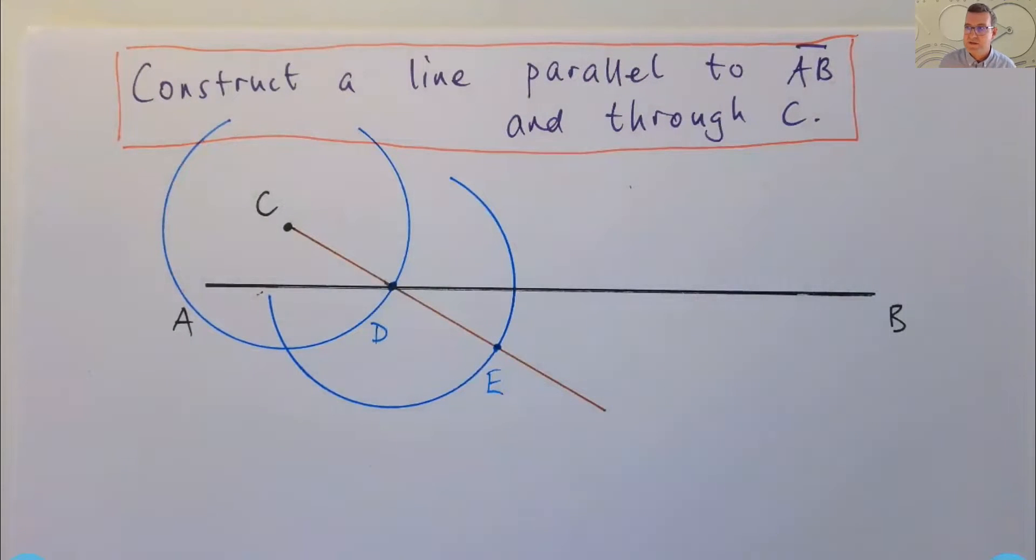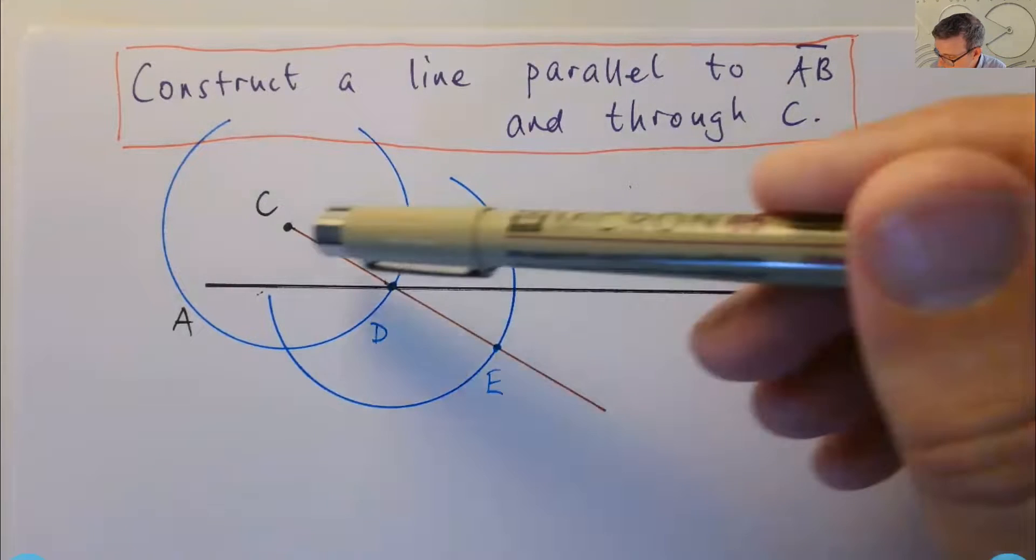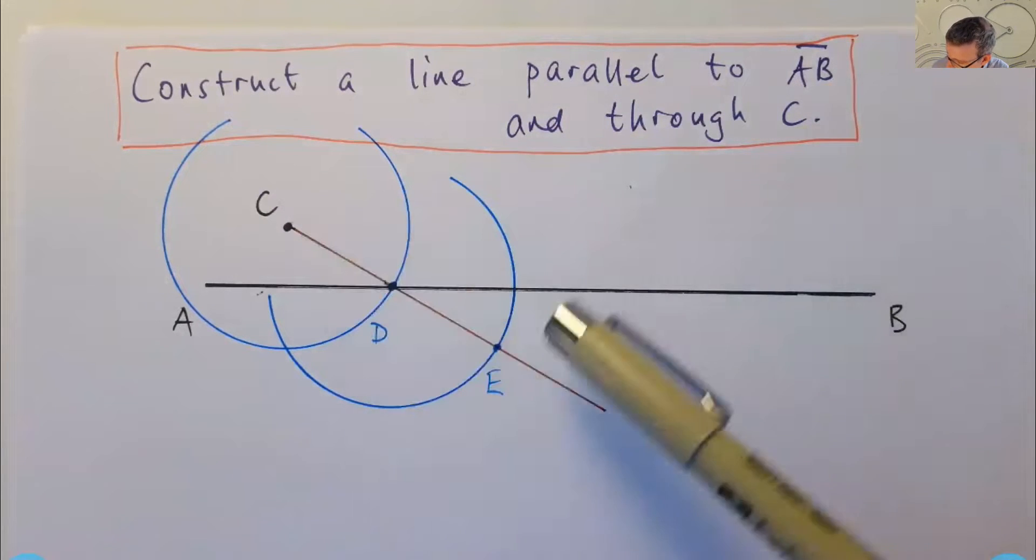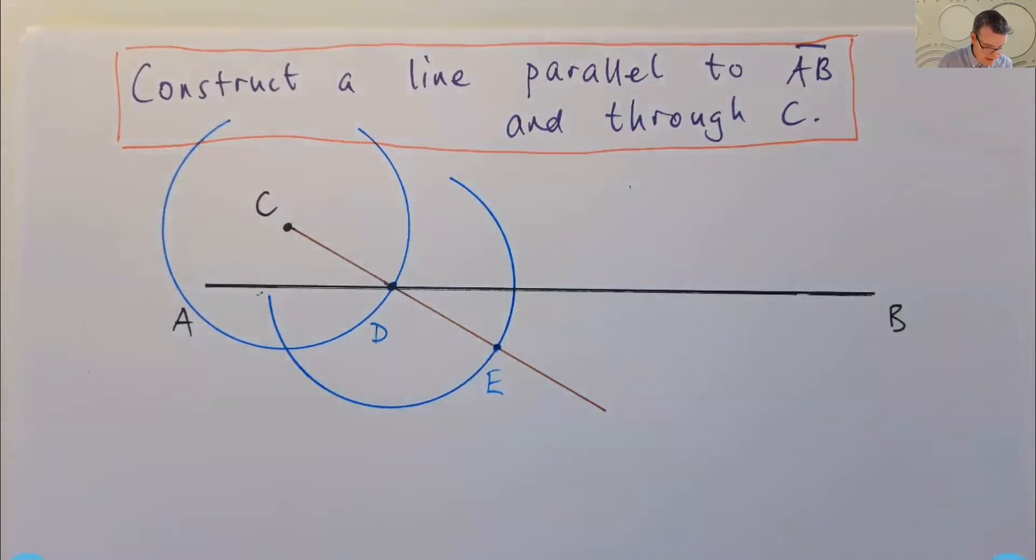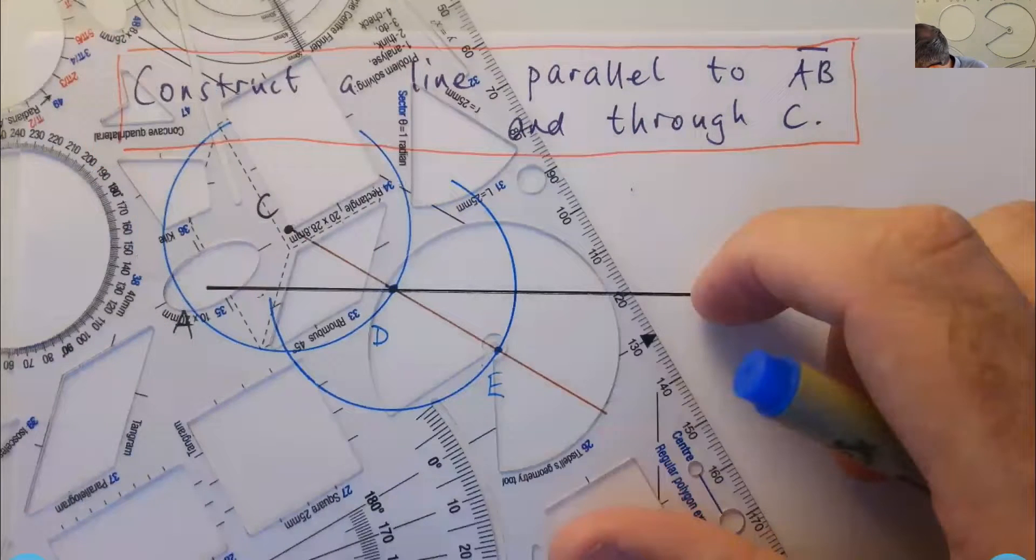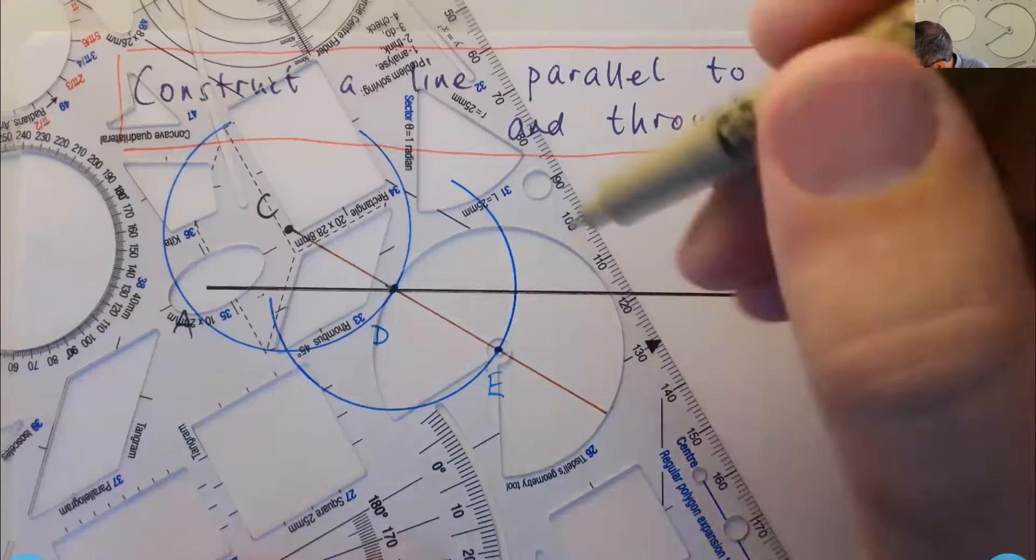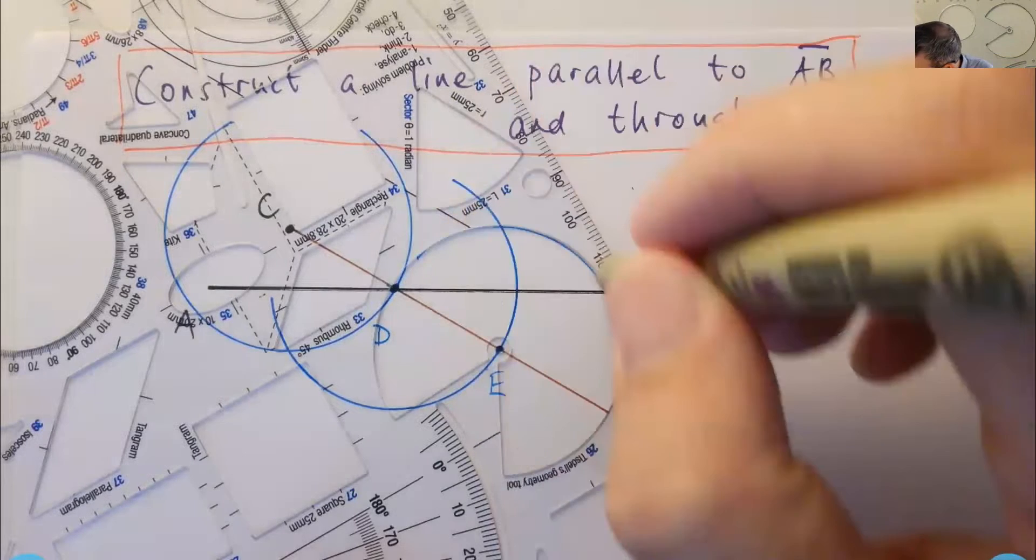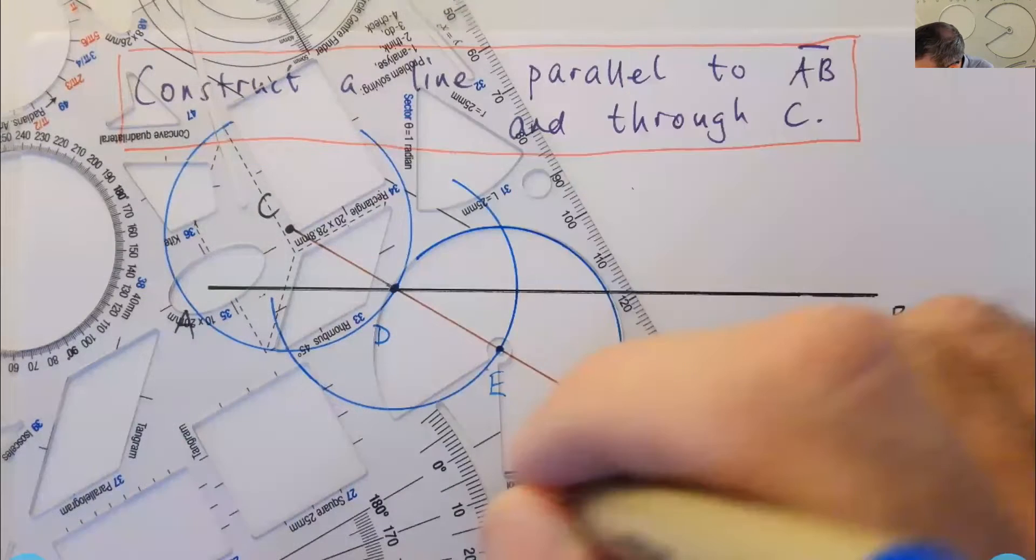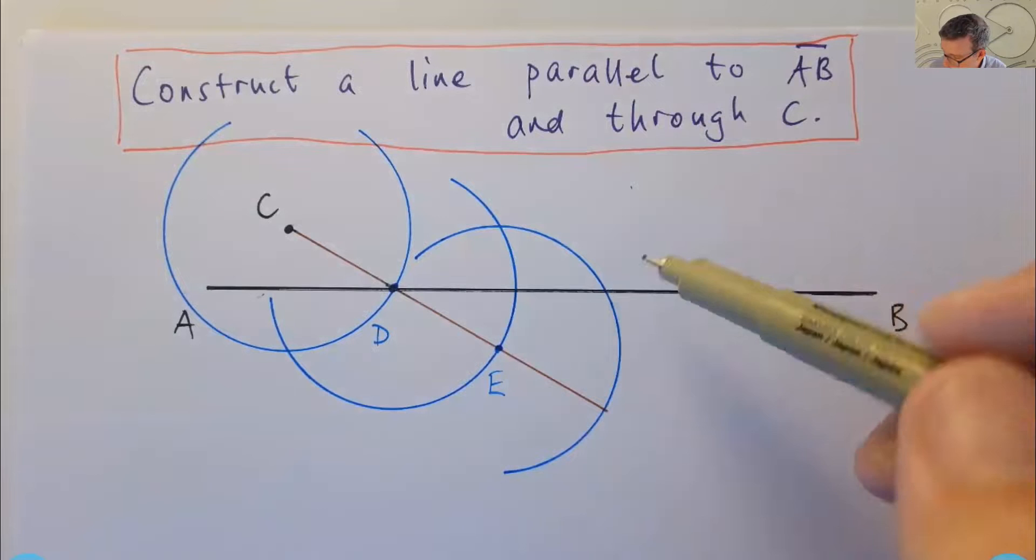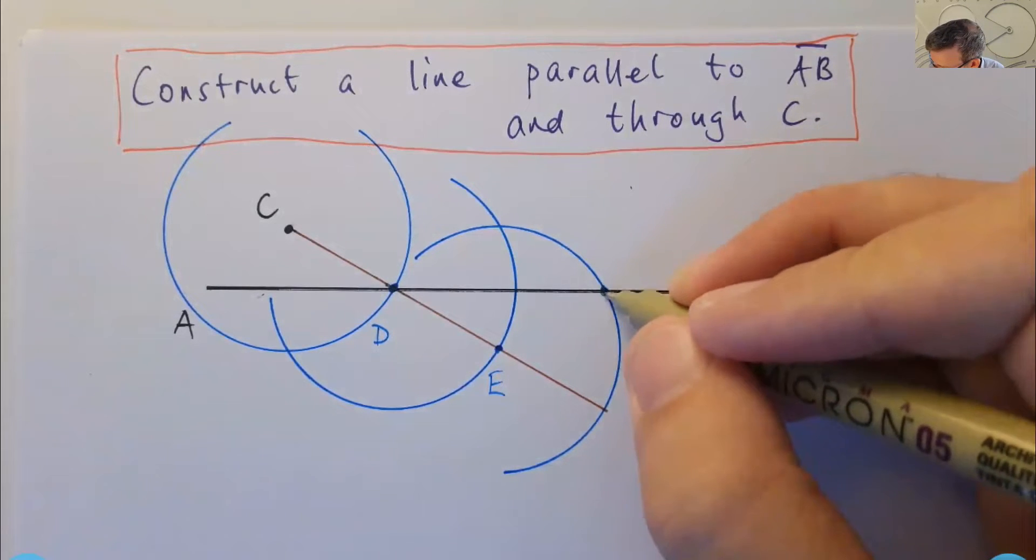Now you might think, well, Chris, what's happening here? We're moving away from this line. I thought we were supposed to be doing a line parallel through this point. Well, now let's move back in the other direction. So let's go to our template once again. And I'm going to place it so it's centered at this point E. And I'm going to draw another arc. Now, again, that will actually intersect twice. We've already got that point. It'll give us a new point here. Let's call that F.